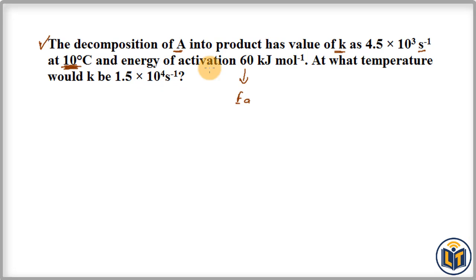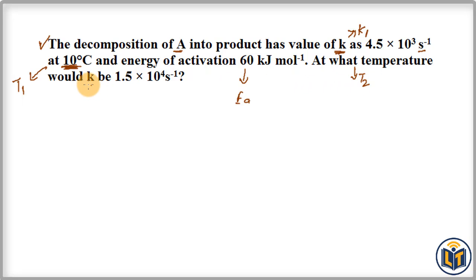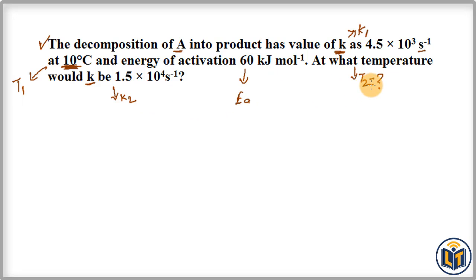At the initial temperature, we label it T1, and the rate constant at this temperature is labeled K1. The energy of activation is given. At the new final temperature T2, the rate constant value is K2. Here, T1, K1, and K2 values are given along with energy of activation, and we have to calculate the new temperature T2.